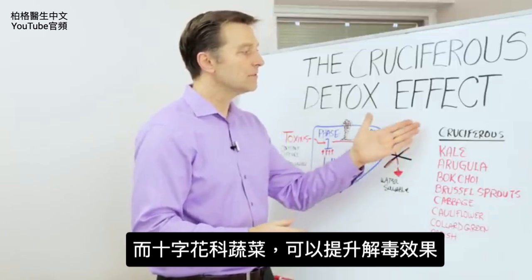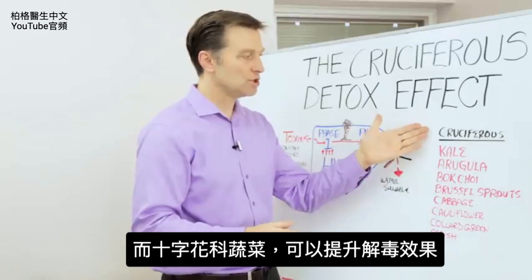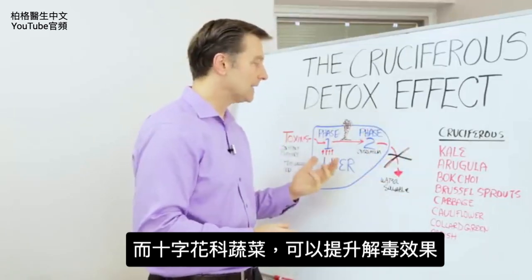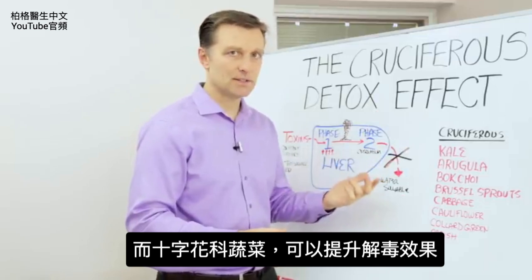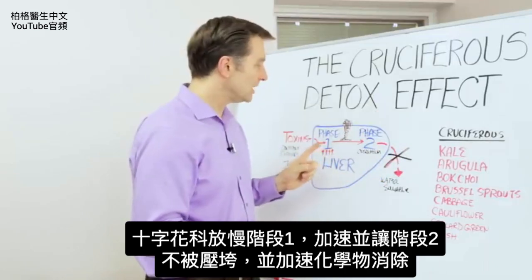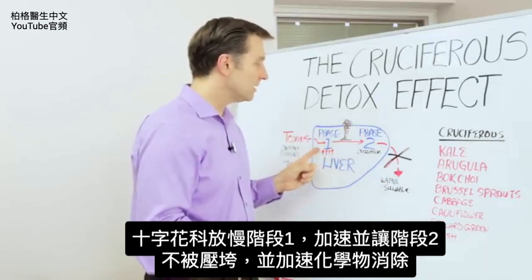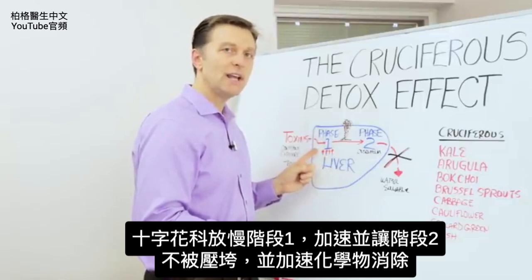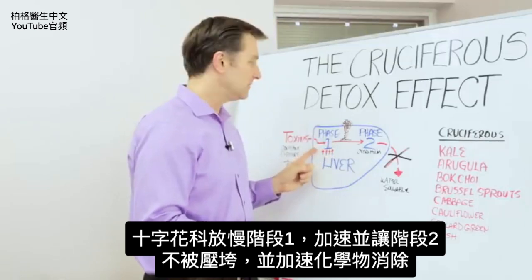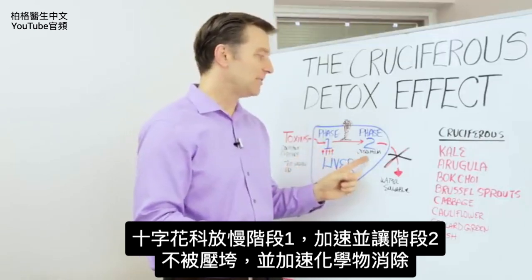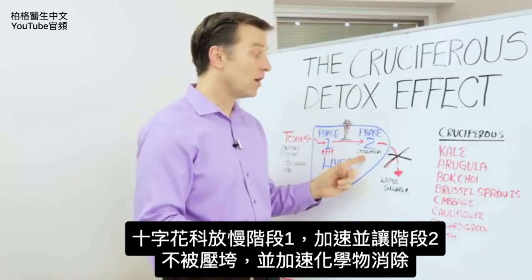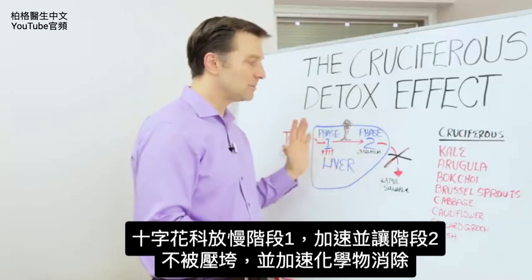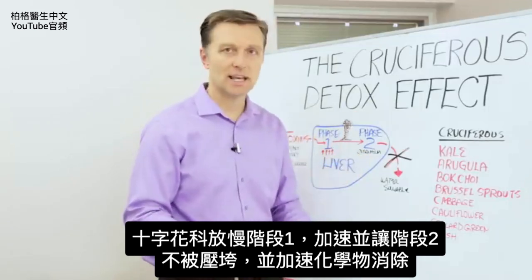So what cruciferous vegetables will do is enhance this process. They actually inhibit phase one — they will slow down an overactive phase one and speed up phase two, so the process is not overwhelmed but instead allows for faster elimination of these chemicals.